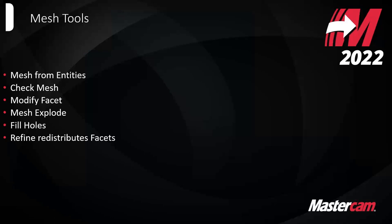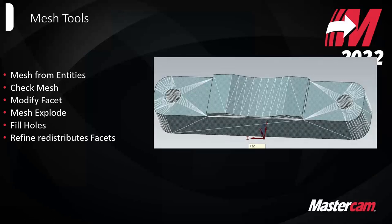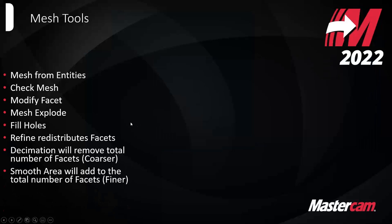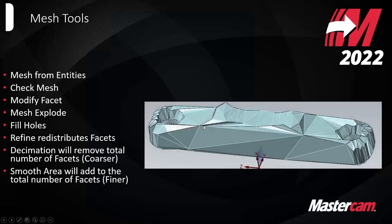There's also a refine function. When a mesh gets brought in, it has however many triangles it's going to have depending on complexity. Based on those white triangle lines, they can be pretty big. Depending on what you're going for, there's decimation and smooth area — you're basically making the triangles either coarser or finer. Decimation can make the part look pretty jagged compared to how smooth it was when first brought in.